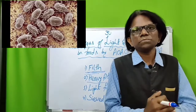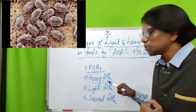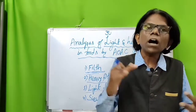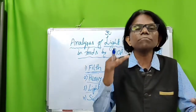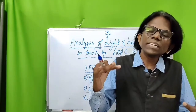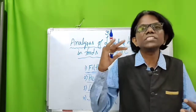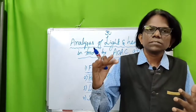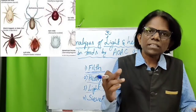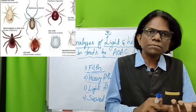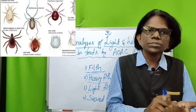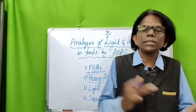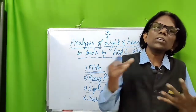Now let us discuss what is light filth. Light filth particles are oleophilic and are separated from food by floating in an aqueous-oil solution mixture. Examples of light filth are insect fragments, cockroach fragments, antennules, barbules, etc. These are all light filth due to their oleophilic nature.